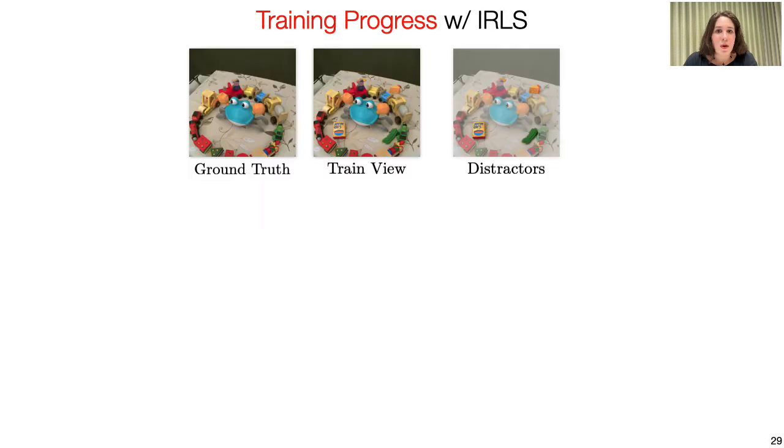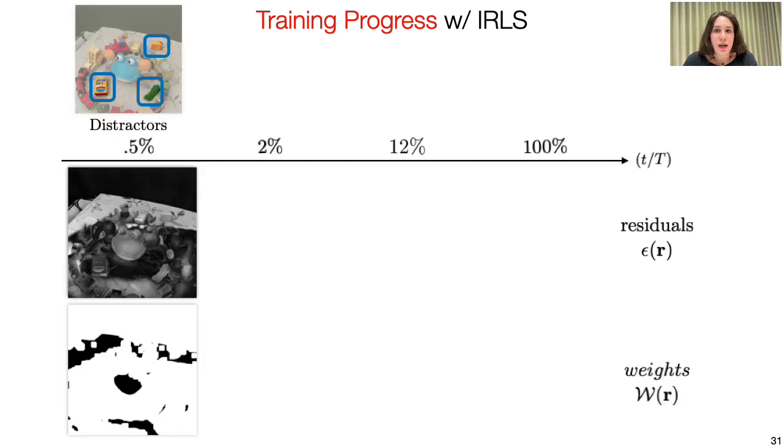Let's take a look at how the kernel adapts for this example where there are three transient objects present between training view and ground truth.